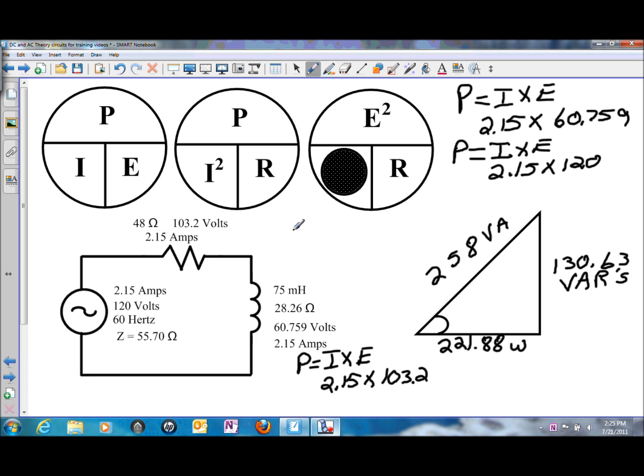Now we could take the values and apply them into Pythagoras theorem. So the volt amps would be the watts squared plus the VAR squared. If we took the 221.88 watts squared plus 130.63 VAR squared and the square root of that, the number comes up to be pretty much the same, 258 volt amps.